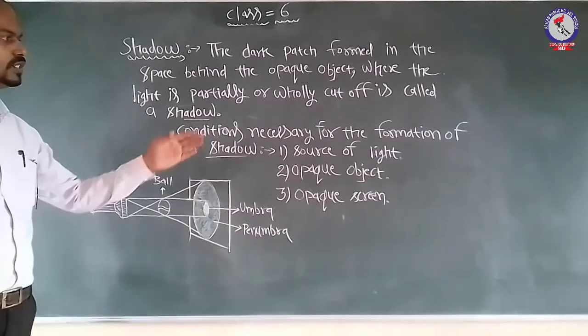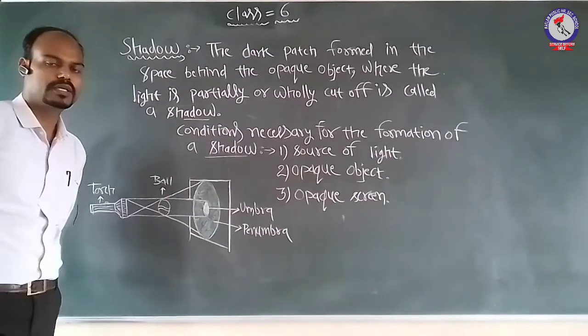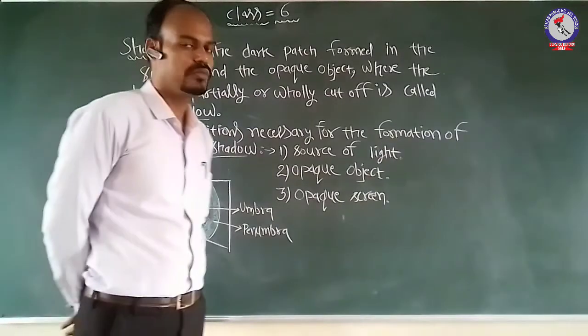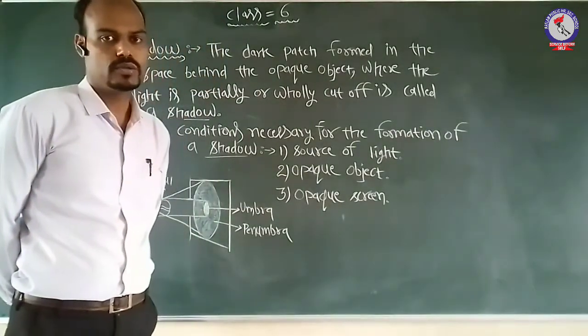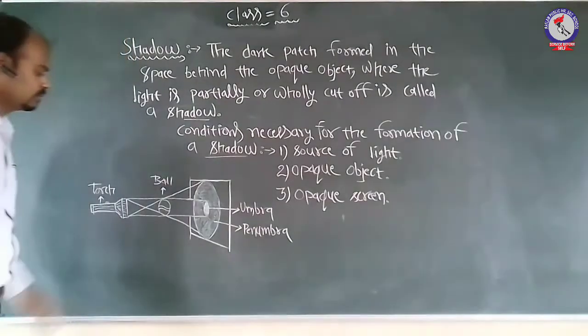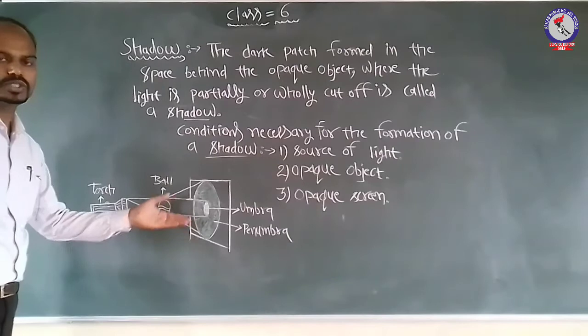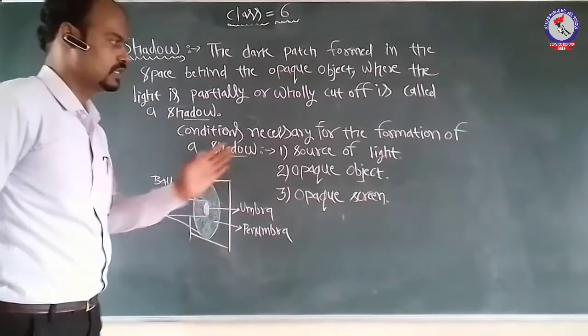Now, the conditions necessary for the formation of a shadow. First of all, there must be a source of light. Second, there must be an opaque object. Light cannot pass through the opaque object. Third, there must be a screen where the shadow forms.